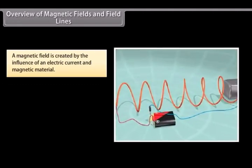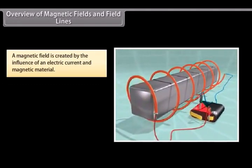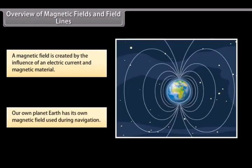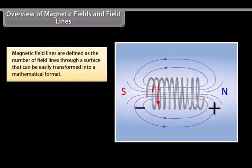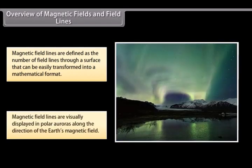A magnetic field is created by the magnetic influence of an electric current and magnetic material. Our planet Earth produces its own magnetic field, which is an important factor during navigation. Magnetic field lines help in stating simple concepts of magnetism easily. These can be easily transformed into a mathematical format. Magnetic field lines are visually displayed in polar auroras where visible streaks of lines are created along the direction of Earth's magnetic field.